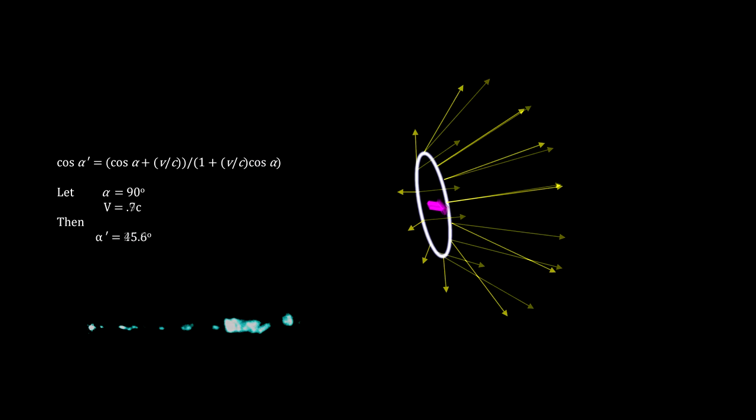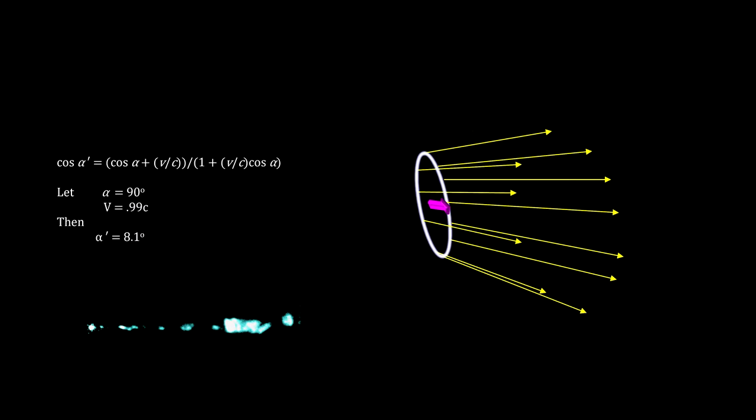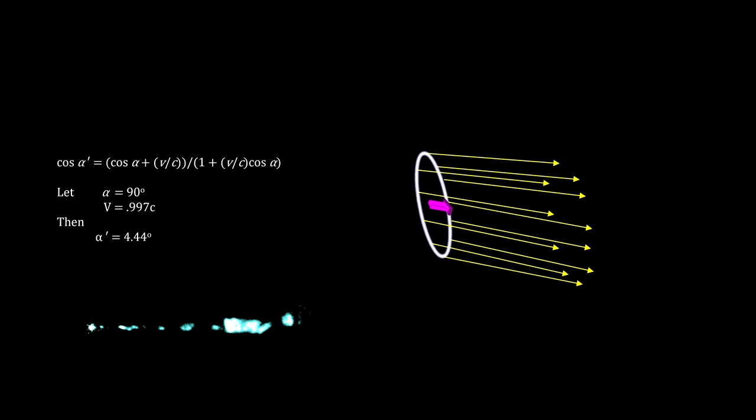For trillions of continually emitting particles, like the electrons in the M87 jet, this beaming effect increases the photon density in the direction of the movement, causing the jet's luminosity to increase. This explains why the jet looks so bright.